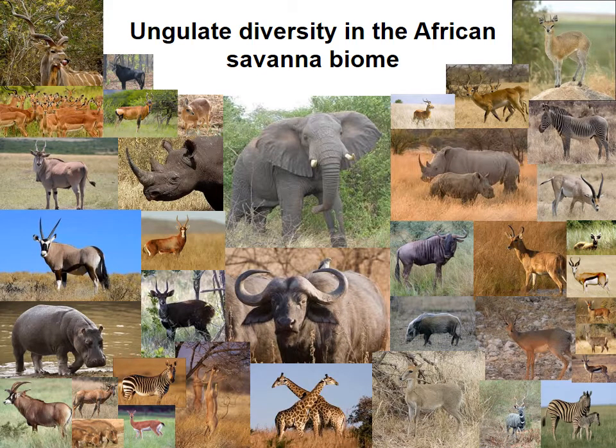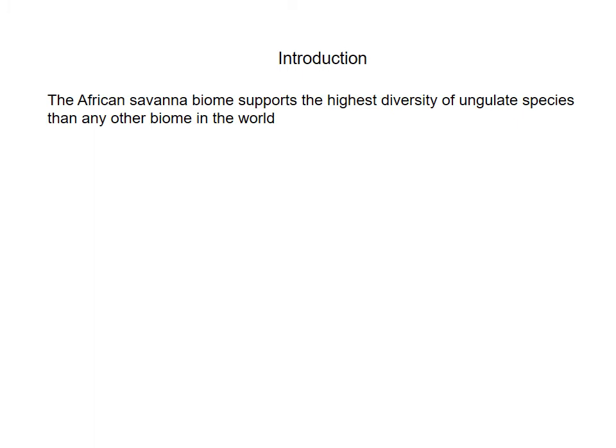In this lecture we're going to have a look at the diversity of ungulates in the savannah biome in Africa. The African savannah biome supports the largest diversity of ungulate species in the world, and there are approximately 46 extant species — species that are currently living — and 80% of these species are in the Bovidae family, so the animals with horns that are attached to their heads.